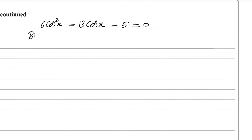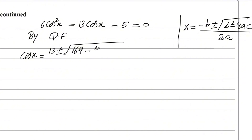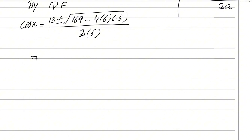We apply the quadratic formula: x = (−b ± √(b²−4ac)) / 2a. Here a = 6, b = −13, and c = −5. Plugging in: minus b gives +13, b² = 169, and −4ac = −4(6)(−5) = 120. Under the square root we get 169 + 120 = 289, so √289 = 17. The result is (13 ± 17) / 12.